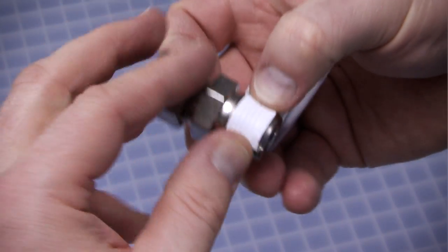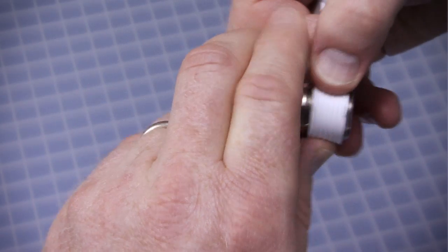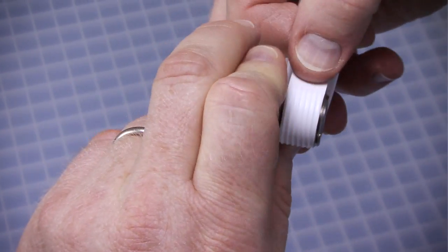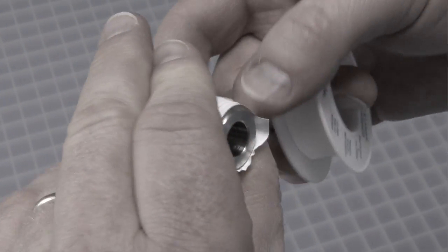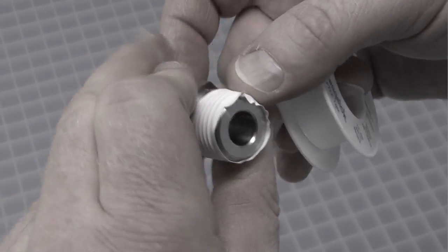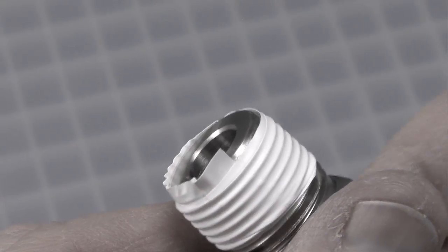Wrap the tape in the direction of the thread spiral of the male pipe thread beginning with the first thread. Tape should never extend beyond or overhang the first thread as tape could shred and get into the fluid system.